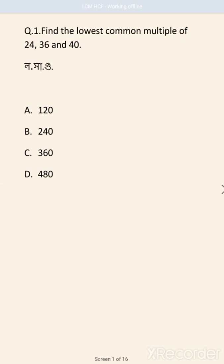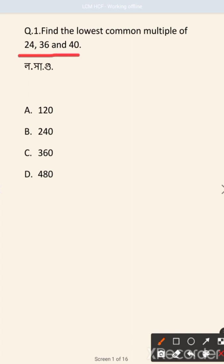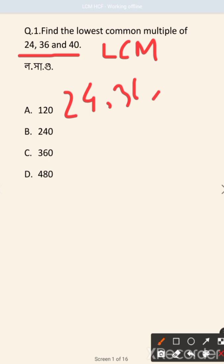Find the lowest common multiple of 24, 36, and 40. We will find the LCM of 24, 36, and 40.